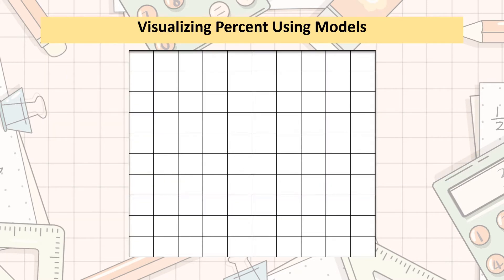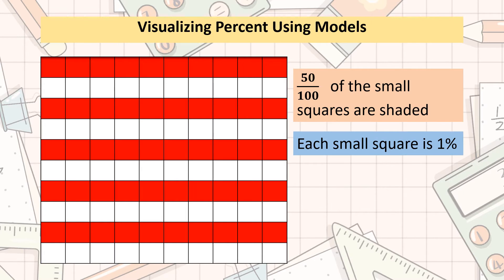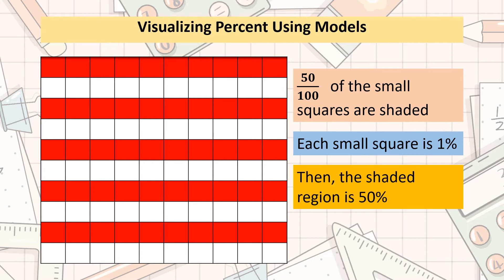Let us move on to example number 2. A large square is divided into 100 small squares. 50 of the 100 squares are shaded, or 50 hundredths in fractions. If each small square is 1%, how is this renamed in percent? If your answer is 50 over 100, or 50%, you are correct.